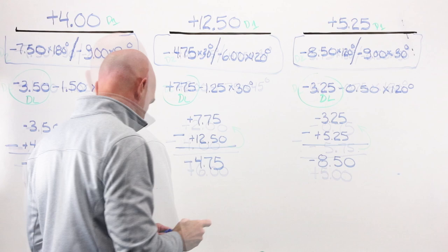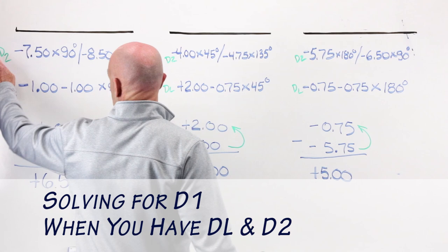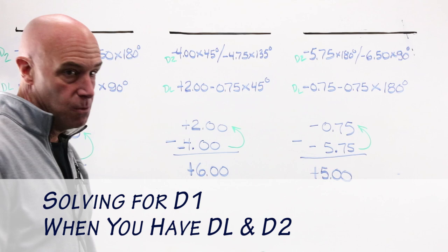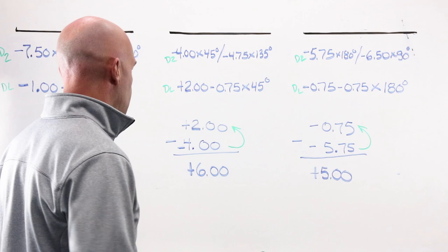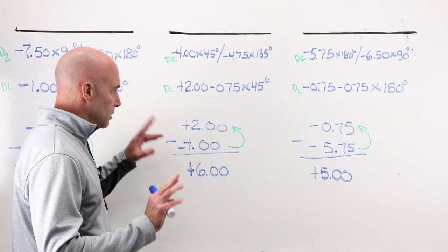Last three examples. What do we have? We have got D2 and DL. D2, DL, D2, DL. What's missing? D1, the front base curve. You will always get the correct answer by doing what I'm about to do. I would encourage you to try to think it through and visualize it more than just using the shortcut or the method.